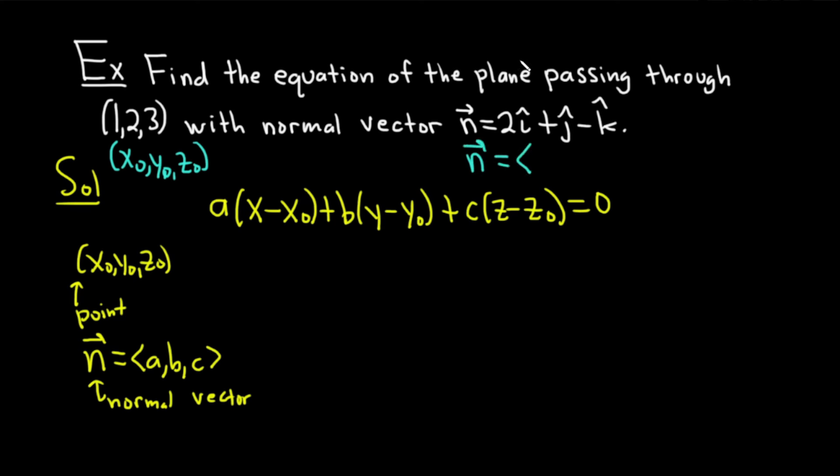So let's write it in component form. So you write down the number in front of the i-hat, so 2. There's a 1 in front of the j-hat, so 1. And there's a -1 in front of the k-hat, so -1. And now we just plug all of these numbers into our equation.